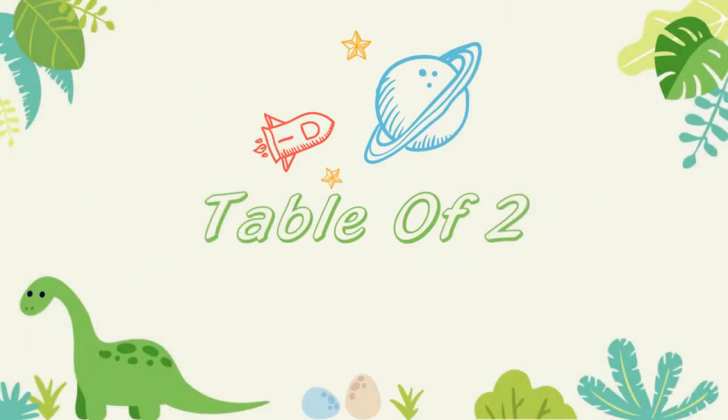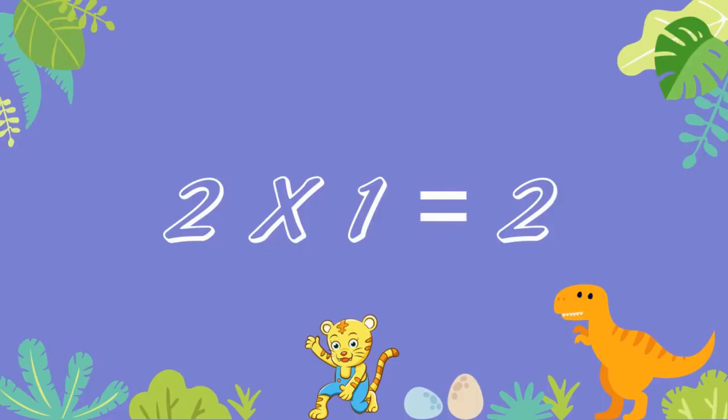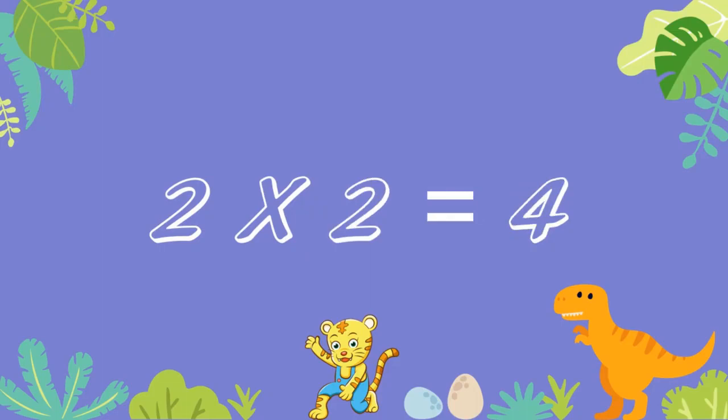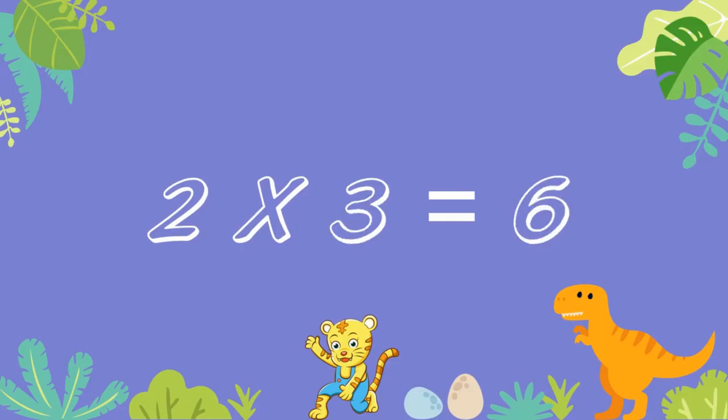Table of 2. 2 ones are 2. 2 twos are 4. 2 threes are 6. 2 fours are 8.